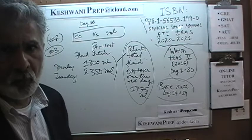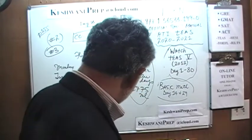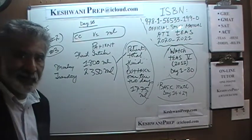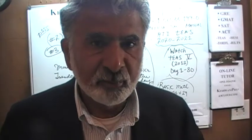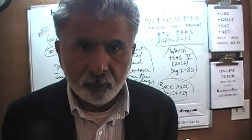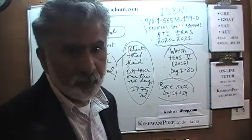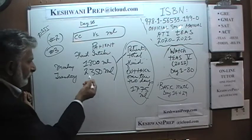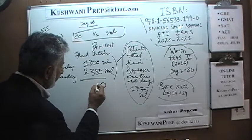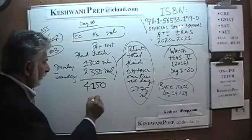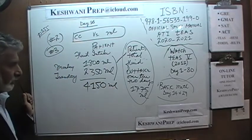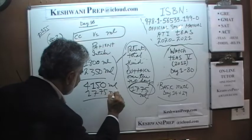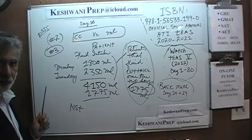The question is straightforward: what is the net fluid retained by the patient's body over the two-day period? We add up the intake: 1800 on Monday plus 2350 on Tuesday. We get 4150 milliliters total intake. The outtake was 1775 milliliters, so we take the difference. That gives us the net.